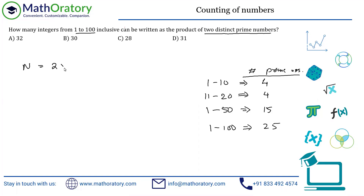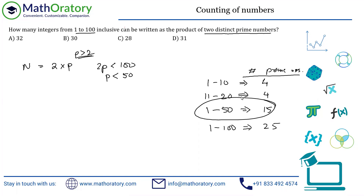Case 1: n = 2 × P where P > 2. The constraint is that 2P must be less than 100, so P must be less than 50. From 1 to 50 there are 15 prime numbers, but that includes 2 itself. Excluding 2, there are 14 other prime numbers from 3 to 50 which satisfy this condition. So this case gives 14 numbers.